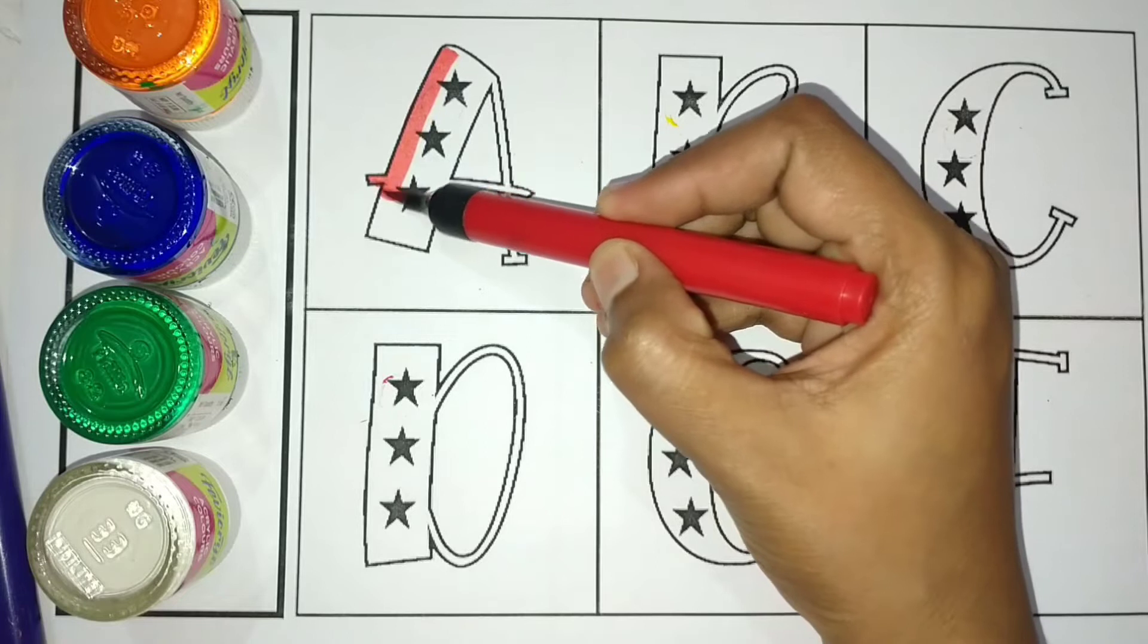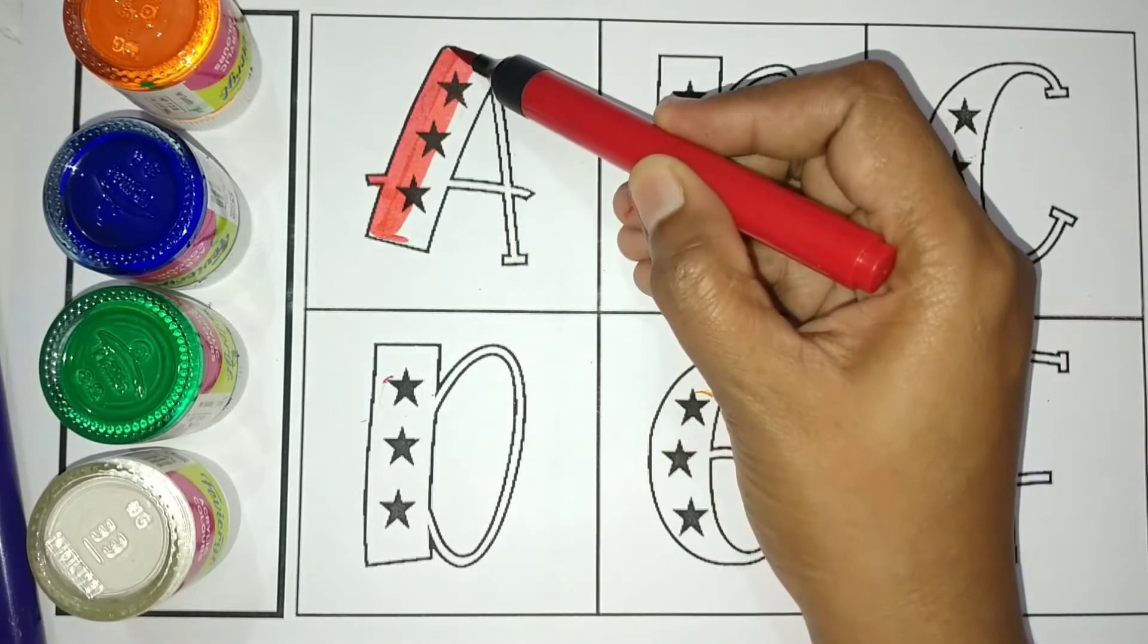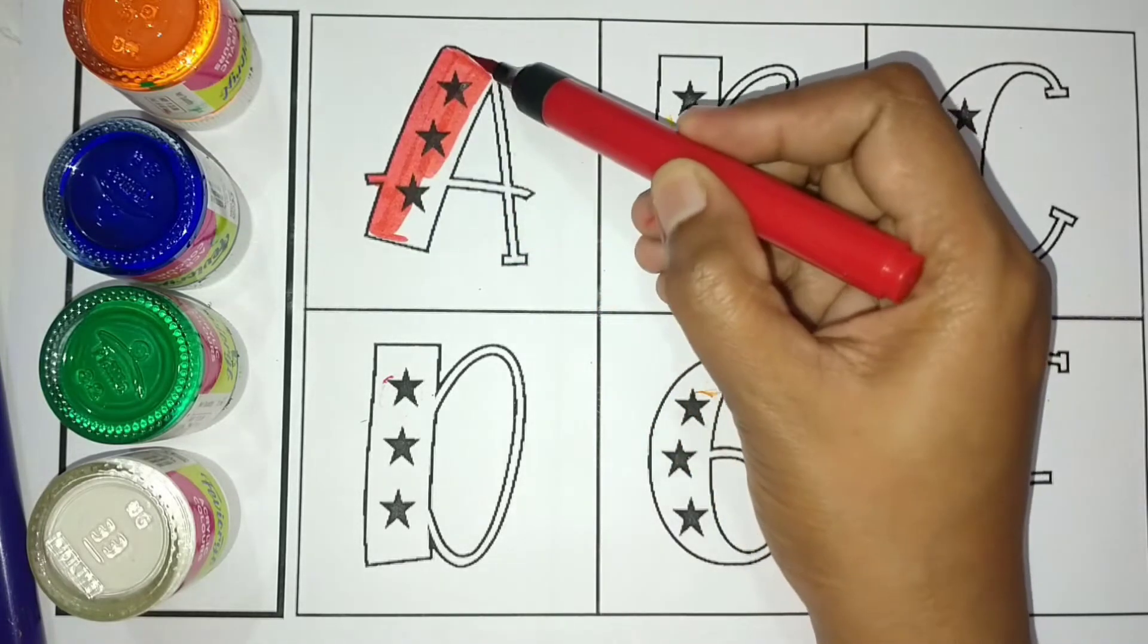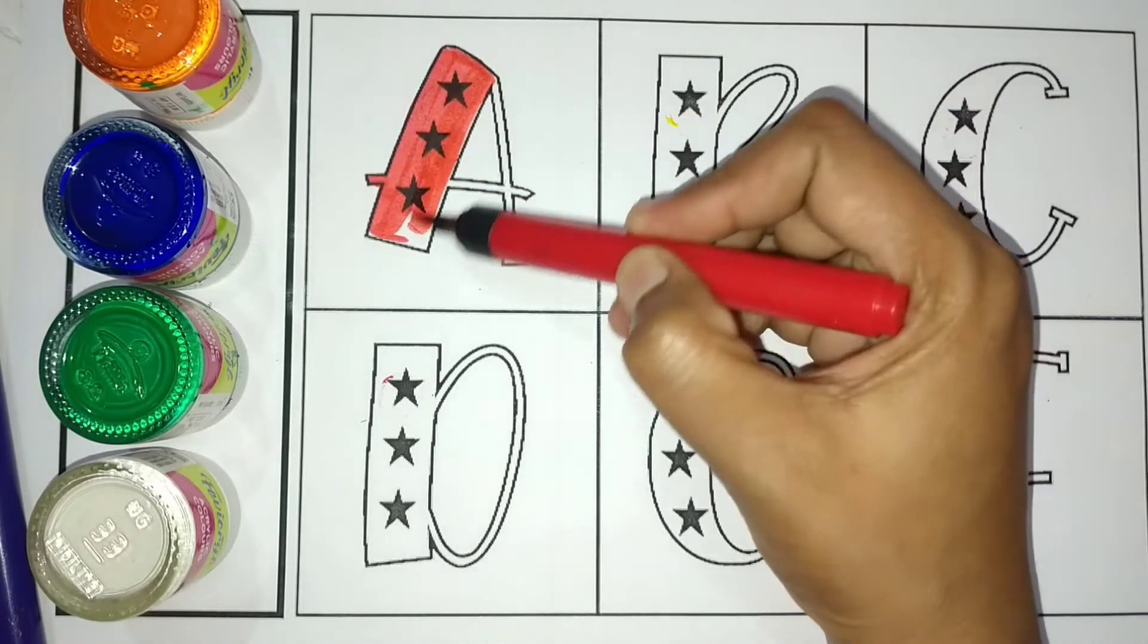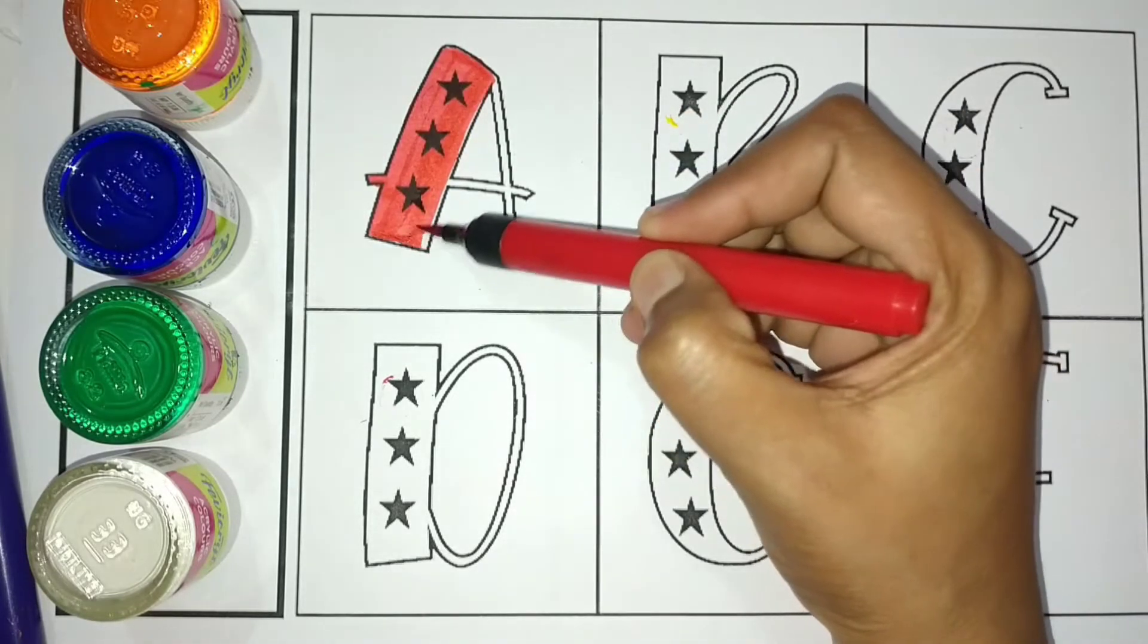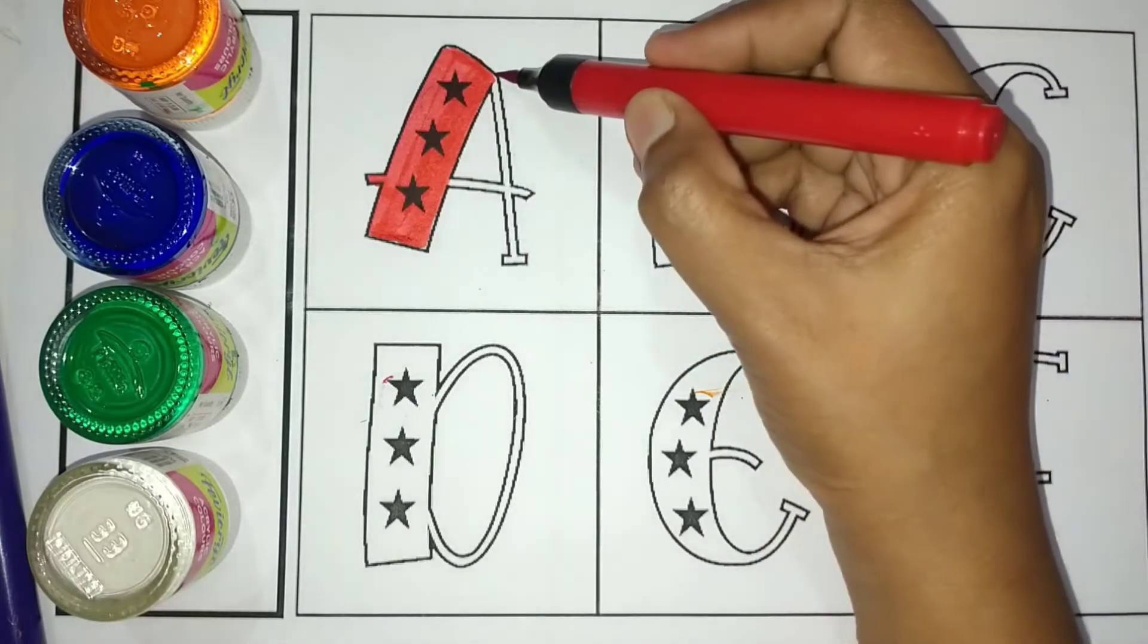A for Apple, Red color, A, A for Apple. Apple means shape, A.